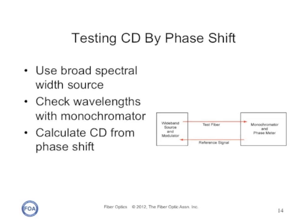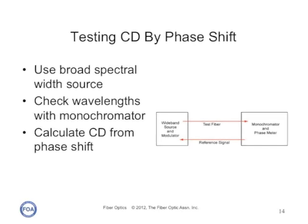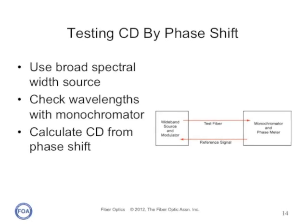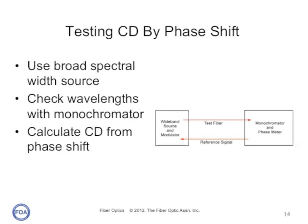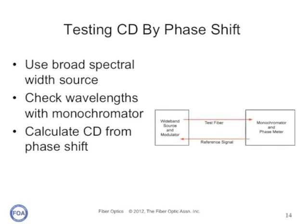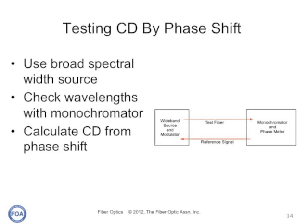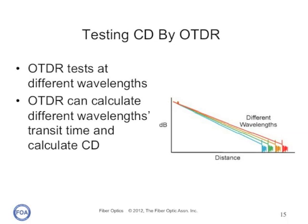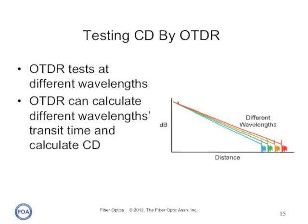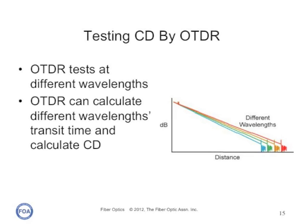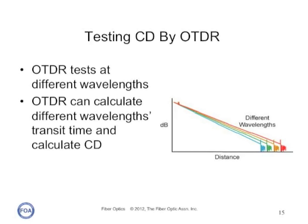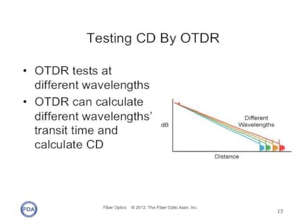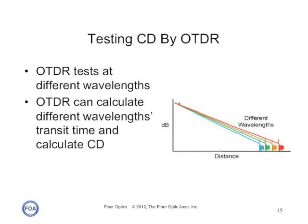Another way to test chromatic dispersion is to use a broad spectral width source and a monochromator to check at various wavelengths. It can calculate phase shifts from the varying wavelength and calculate the fiber's chromatic dispersion. A common fiber optic test instrument, the OTDR, measures transit times in a fiber and uses the index of refraction to calculate distance. If one tests with an OTDR at different wavelengths and calculates the difference in transit times, it can also calculate chromatic dispersion.